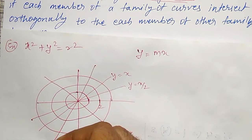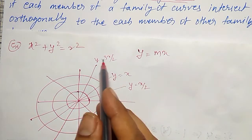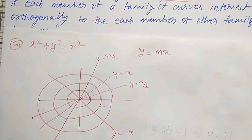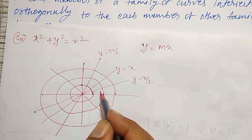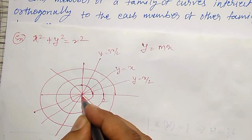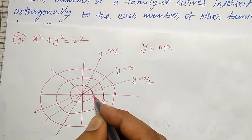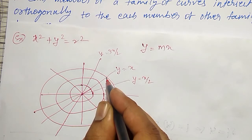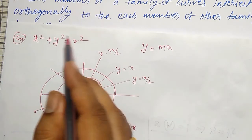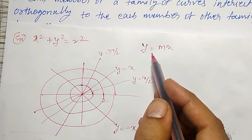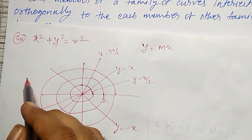For different slopes we get different curves. Each member of the circles is perpendicular to each member of the straight lines, since the straight line acts as a radius. The angle between the radius and the tangent at the point of intersection is 90°. Therefore, the family of circles with origin as center and y = mx passing through the origin are orthogonal trajectories of each other.